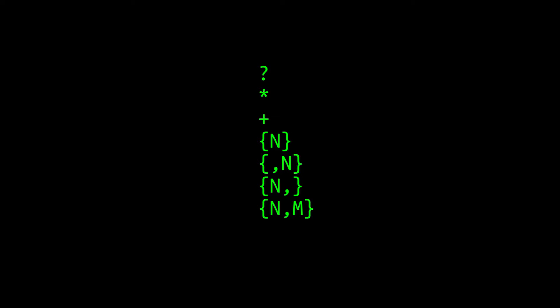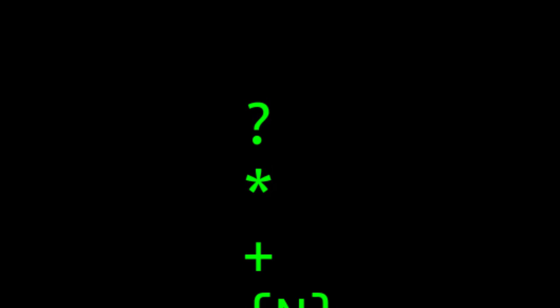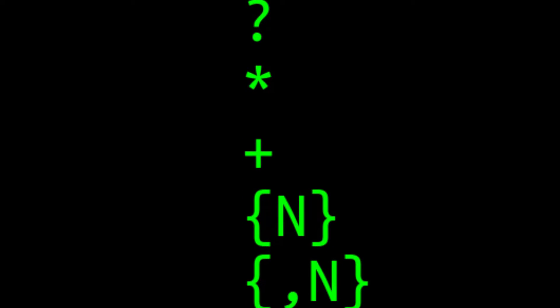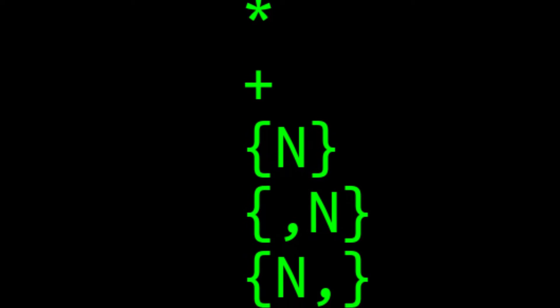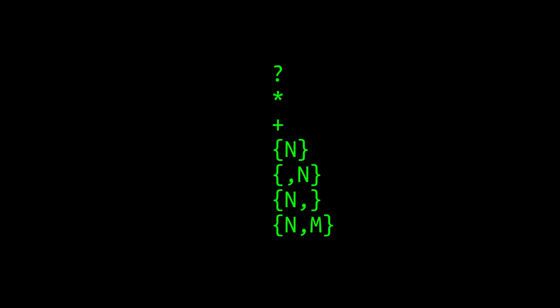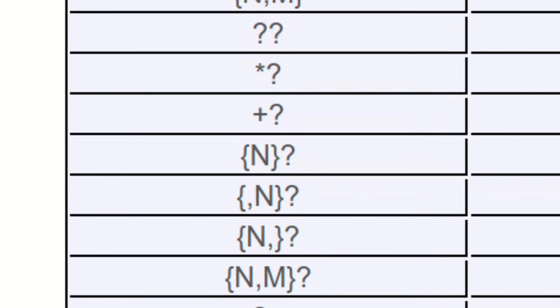Here is the list of every quantifier we've seen so far. These quantifiers are all greedy by default, meaning they will try to match as many times as possible. To make them try to match as few times as possible, just add a question mark character after any quantifier. These are commonly known as lazy quantifiers — they're also sometimes called reluctant.